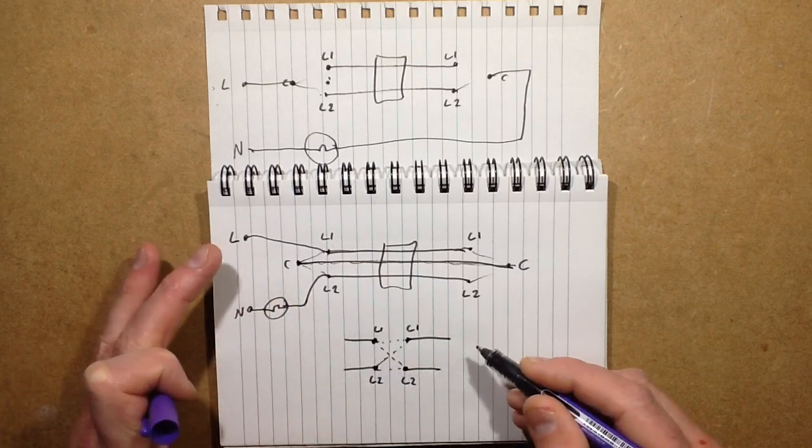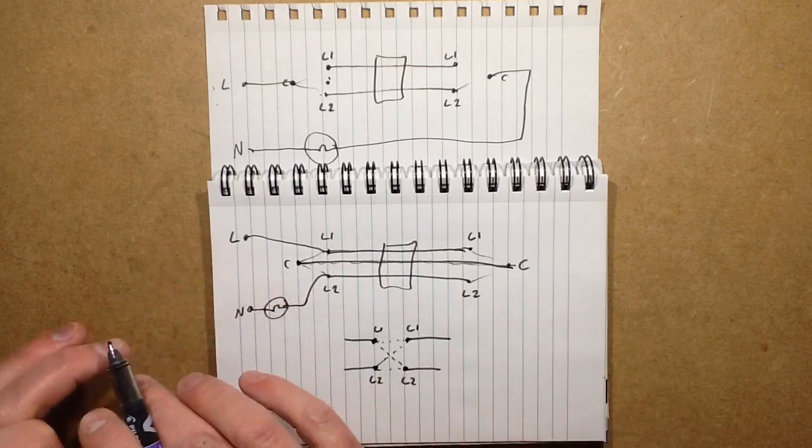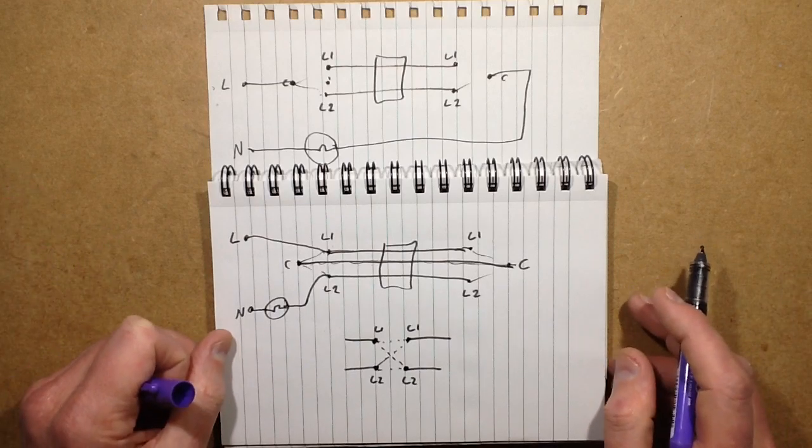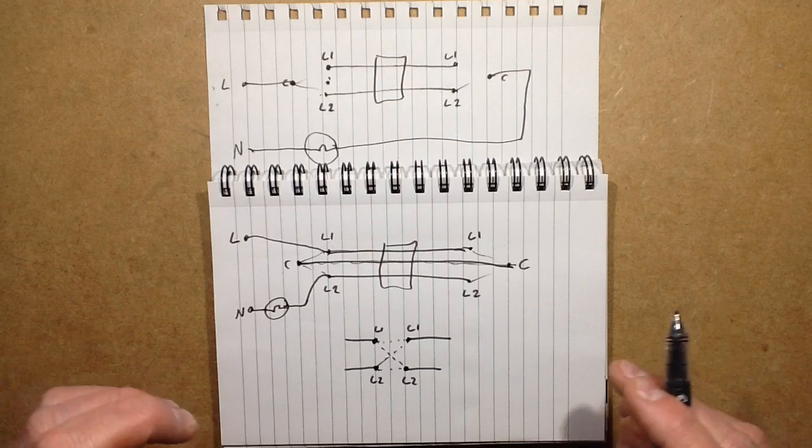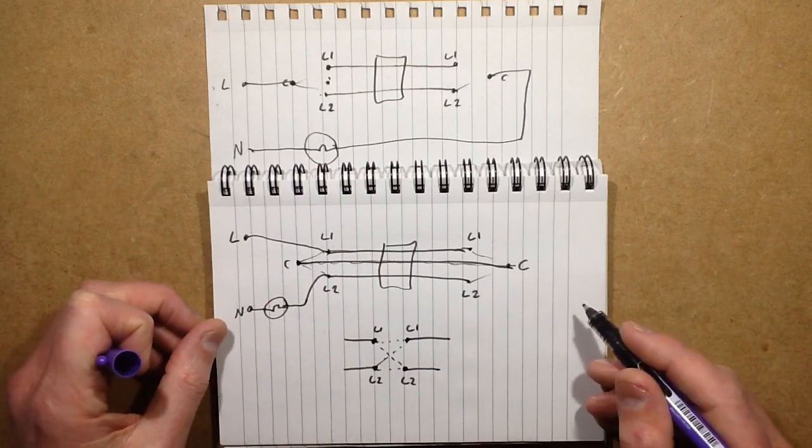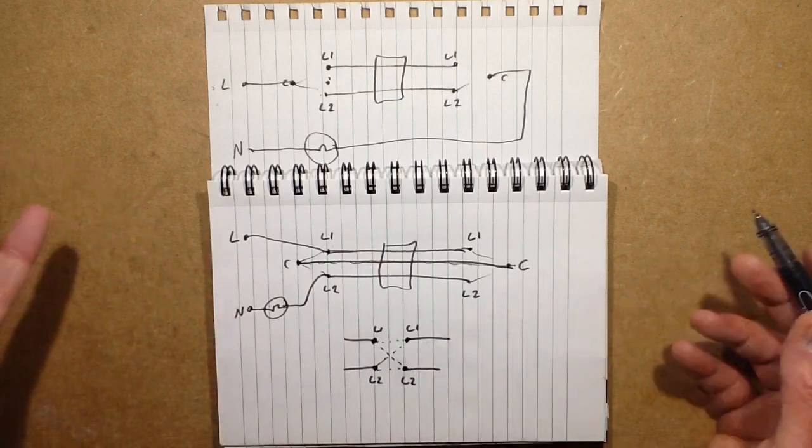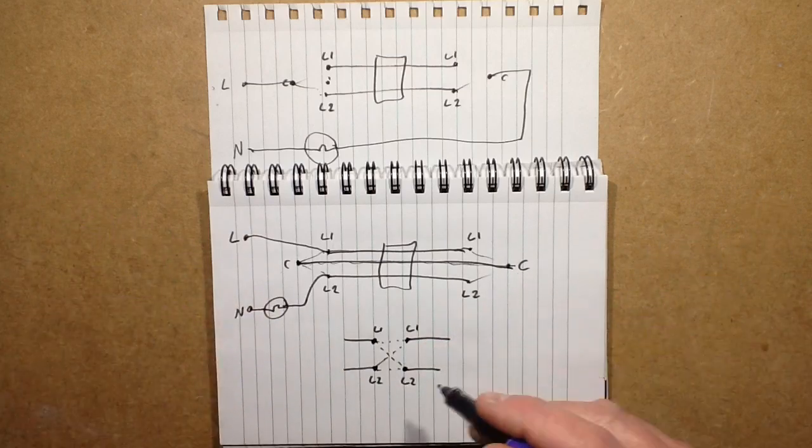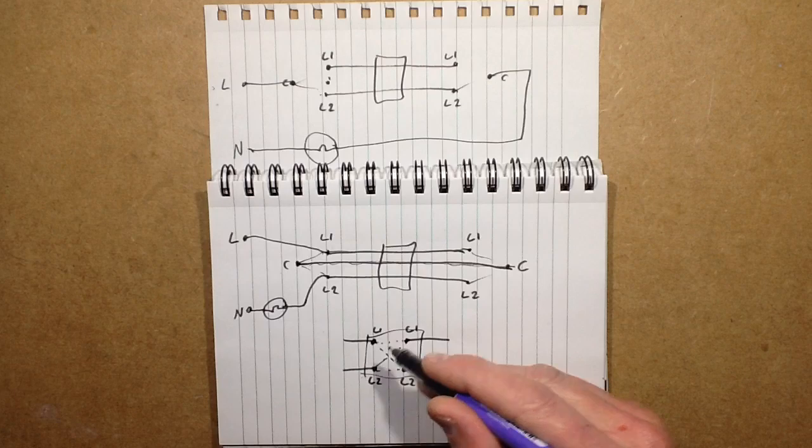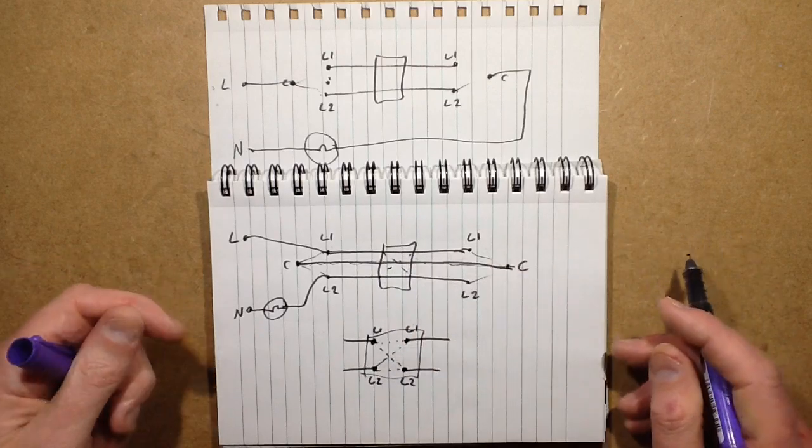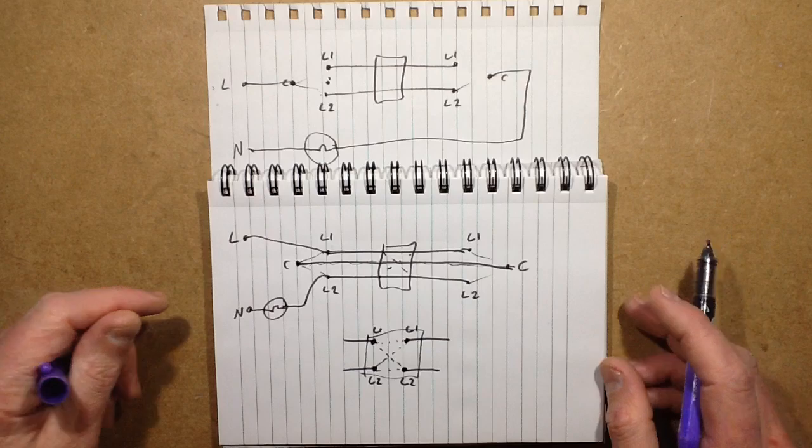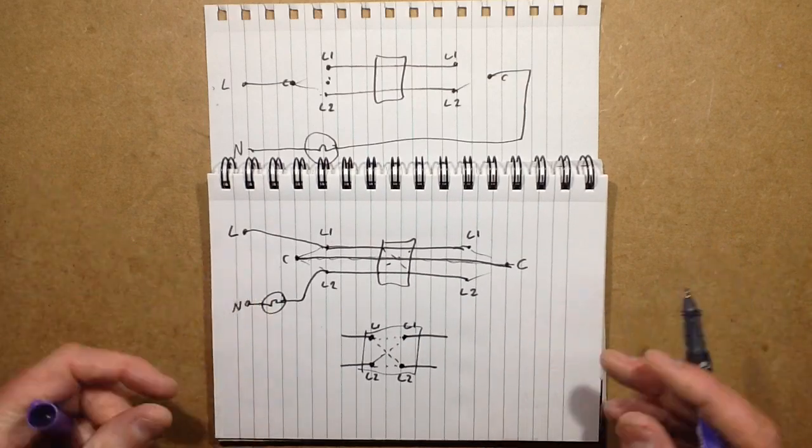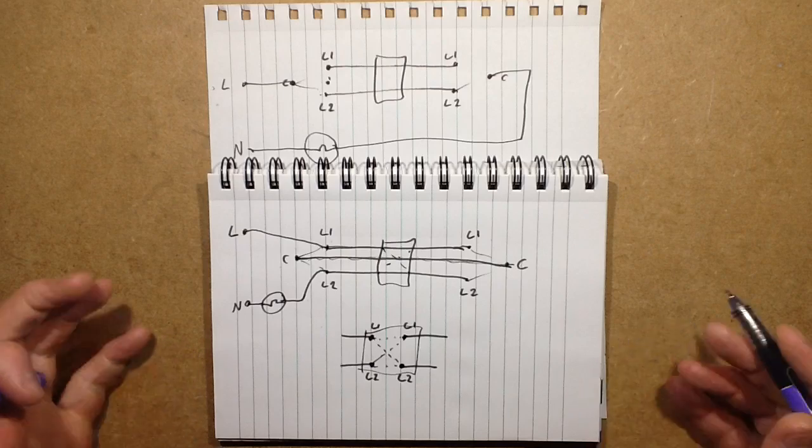And you can put as many of these switches anywhere along that line that you want. You could have a hotel lobby with 10 or 20 switches, 30 switches if you want, that switch the whole lighting circuit. Because basically just along those strappers you can just put extra switches in anywhere. So that's the principle of two, three, four, five, six-way light switching. Very, very simple. So worth playing about with and getting familiar with.